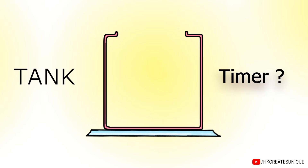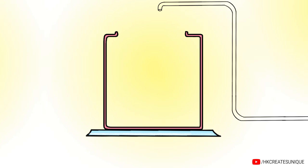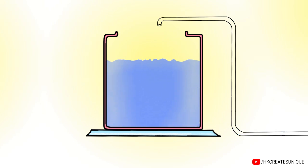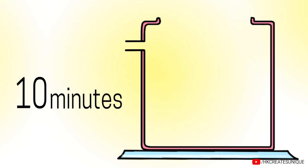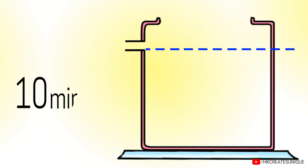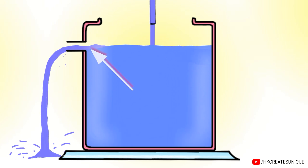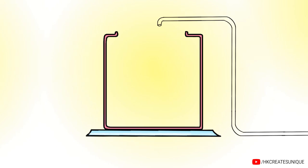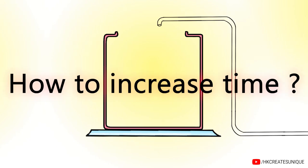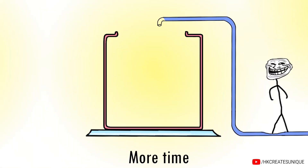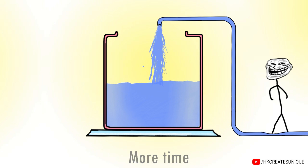Did you know that a tank is a timer? If you try to fill it with a liquid such as water, it takes time to increase the water level. Let's say this tank takes 10 minutes to fill up to level A — so this is a 10-minute timer. As you start filling up the tank, after 10 minutes, water comes out of this pipe and lets you know that 10 minutes is over. To increase time, if you step on the pipe, a resistance to the flow of water is created, and therefore it takes more time to fill the tank.